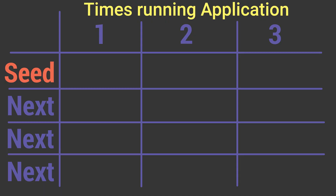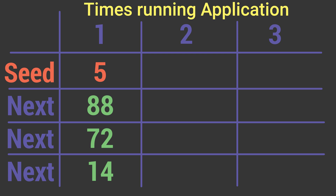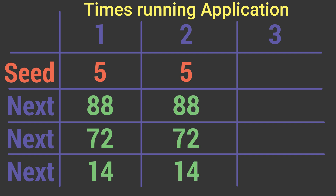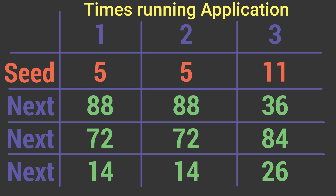This random type works very similar to many other random types in computer programming, where we basically initialize it with a seed value. When we initialize it with a seed value, anytime we ask for a new random number it's going to return a predictable sequence of random numbers. So let's say we want to generate a random integer between one and 100 and we pass in a seed value of five. When we request a new random value, we're going to get the same results every time we run our application — for example, 88, then 72, then 14. If we close the application and run it again with the same seed value of five, we'll get 88, 72, 14 again. However, if we initialize it with a different seed value, say 11, we'd get different numbers like 36, 84, 26.